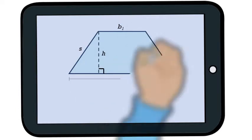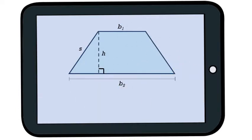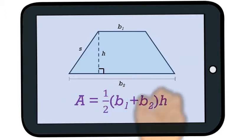The area of a trapezoid is the average of its bases times its height. So the formula is A equals one half times parenthesis B1 plus B2 close parenthesis times H.